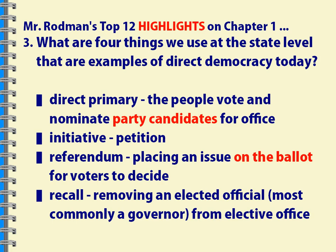Recall is something we don't have here, but you'll see it in a place like California — the most recent example being recalling Governor Gray Davis during the energy crisis. Arnold Schwarzenegger was elected as a result of that recall election. Basically, voters sign an initiative petition and put it on the ballot to recall an elected official — to say they don't want that official in office. Gray Davis was removed. Scott Walker in Wisconsin faced a recall petition, but it was voted down and he fought it off.